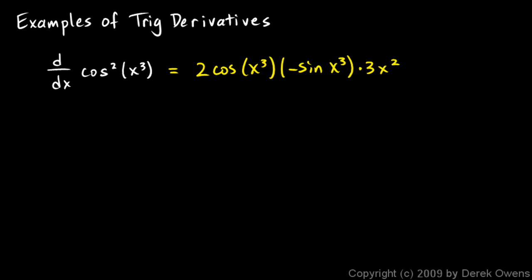So the chain rule gets applied two times. And then we can clean up a little bit. We've got a negative sine and a 2 and a 3. That comes out to a negative 6, and I'll move this x squared here out to the front. Negative 6 x squared, cosine of x cubed, sine of x cubed.